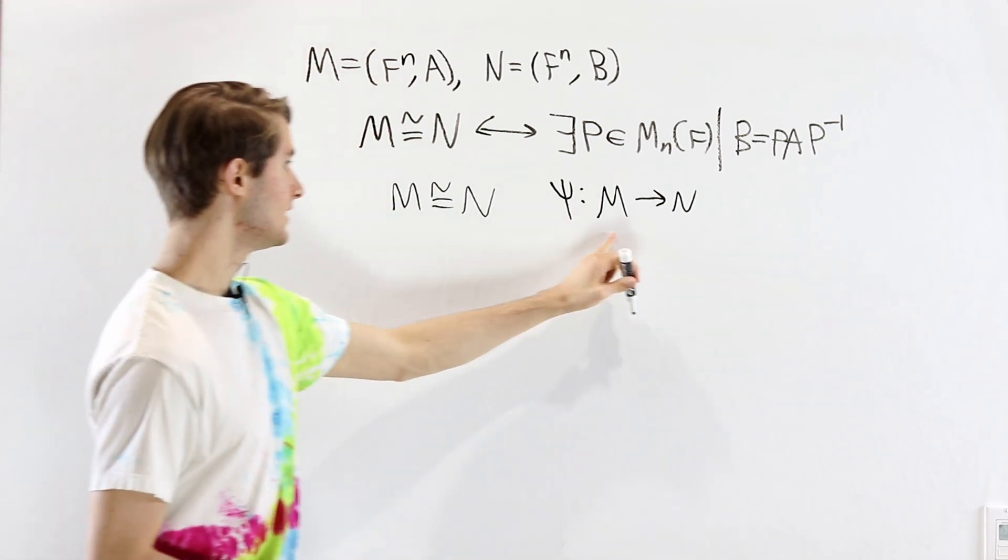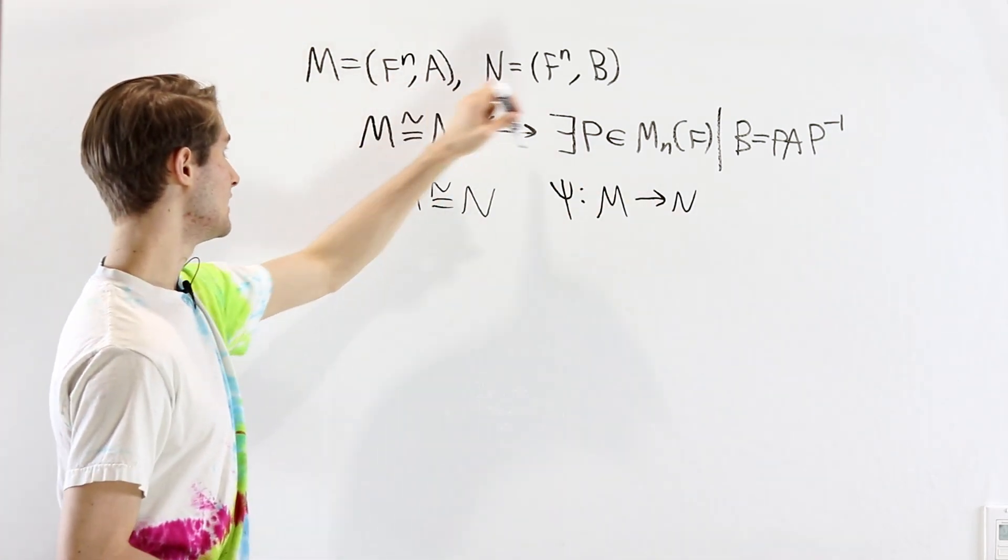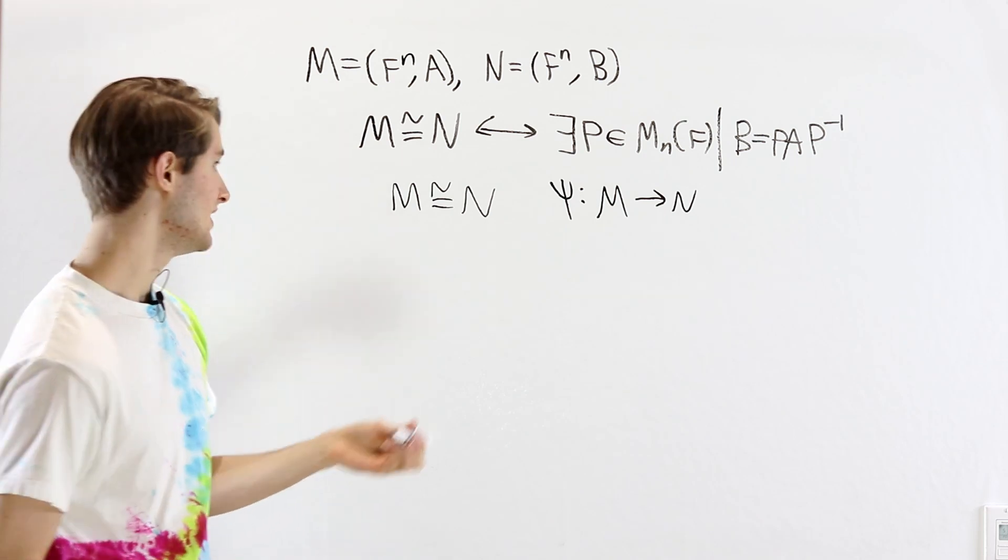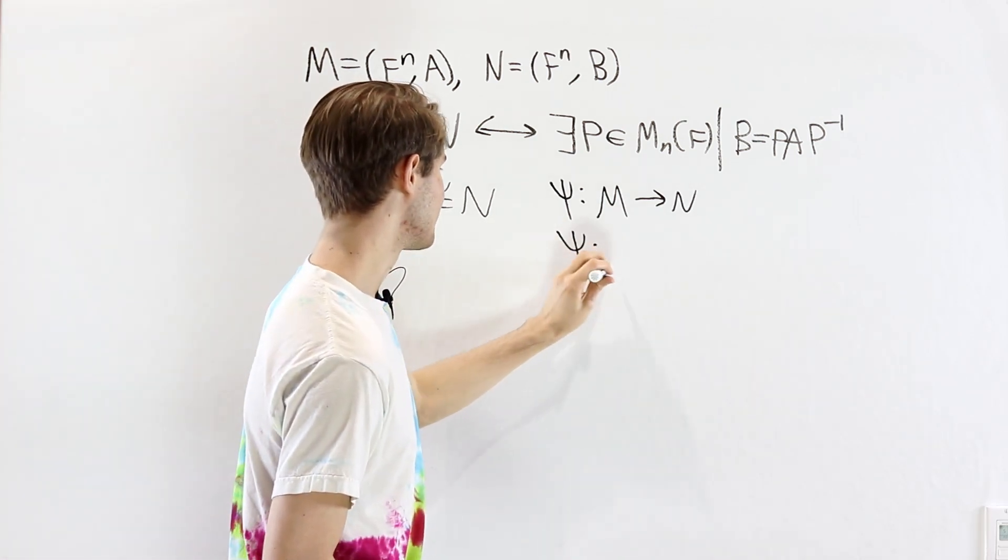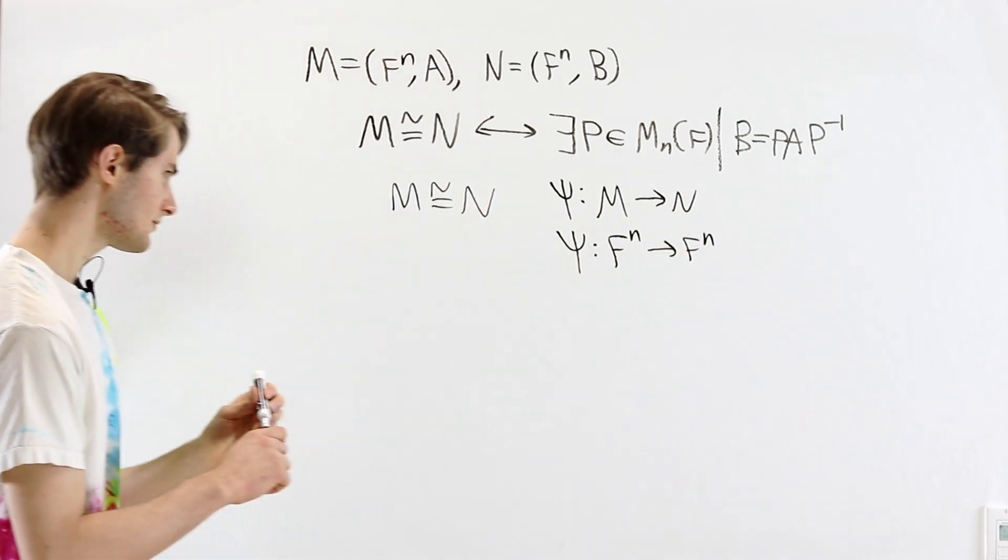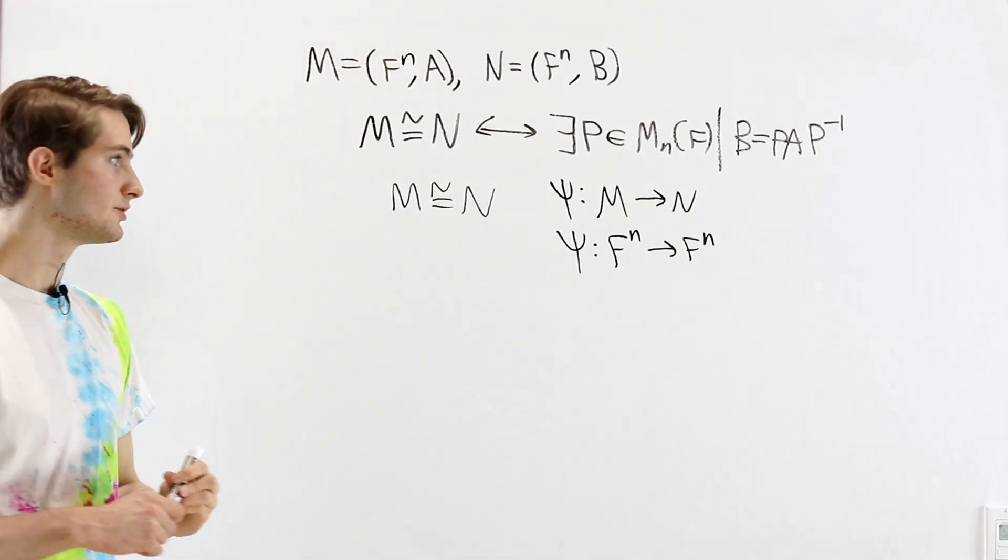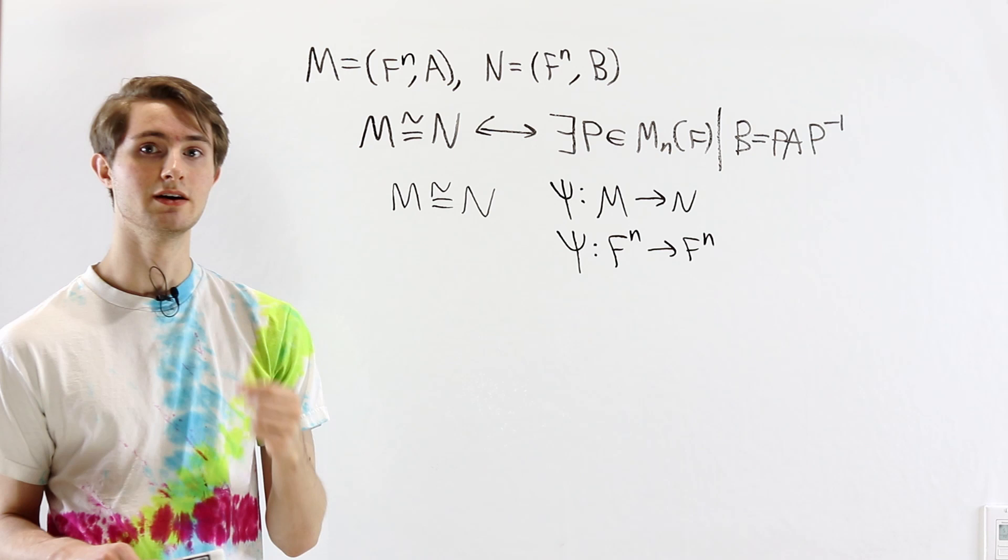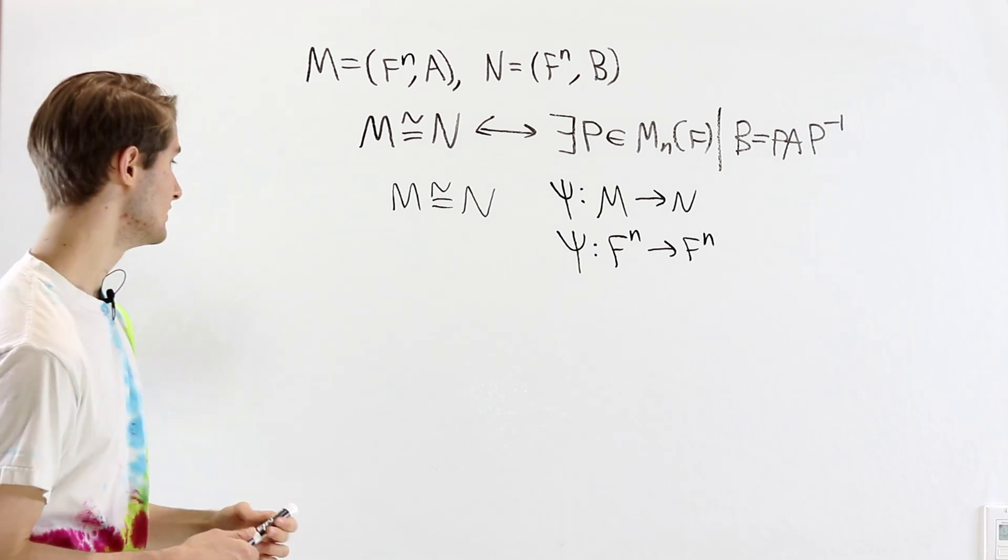We know that the elements of M and N can be described as these vectors in F^n. So we can also say that ψ goes from F^n to F^n. Now if ψ is an isomorphism, it needs to be a homomorphism. So let's look at those conditions first.